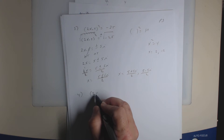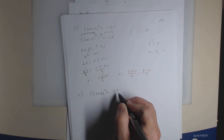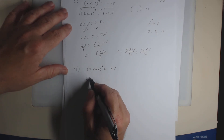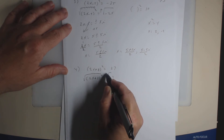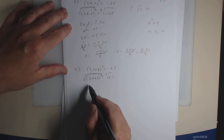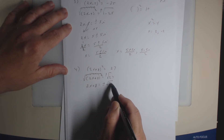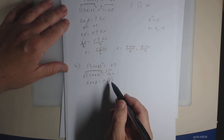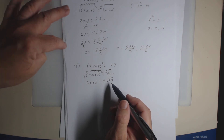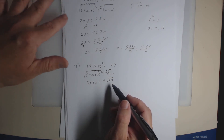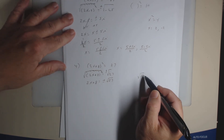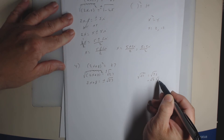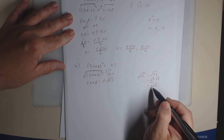One more example. Suppose we had (2x plus 8) squared equals 27. Take the square root of both sides, plus or minus. The square root and the square cancel each other, so you get 2x plus 8 equal plus or minus the square root of 27. Now you have to determine if there's a perfect square that goes into 27. 27 is not a perfect square, but 9 goes into it. So the square root of 27 equals the square root of 9 times 3, which equals the square root of 9 times the square root of 3, which is 3 square root of 3.